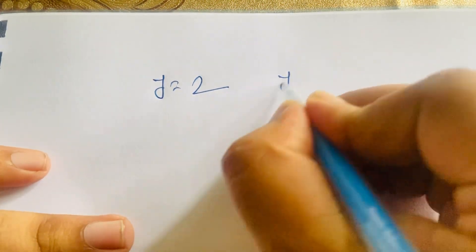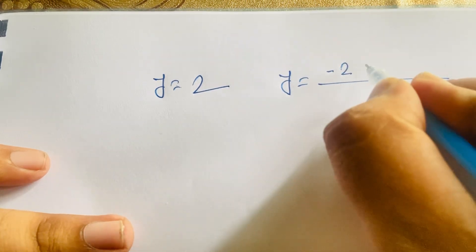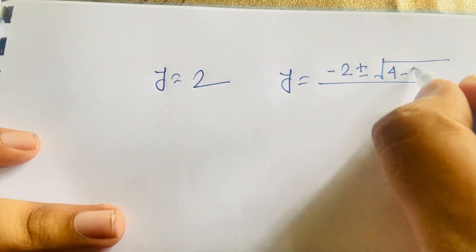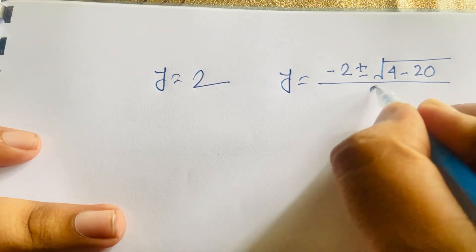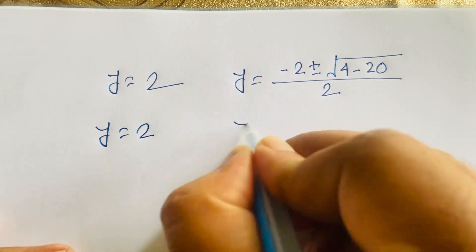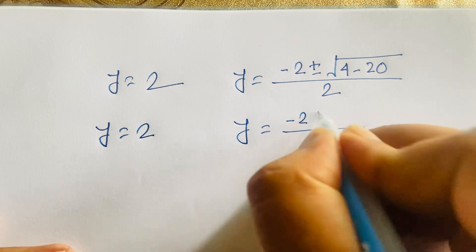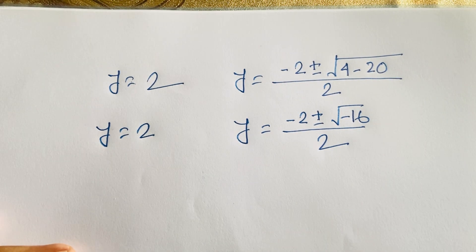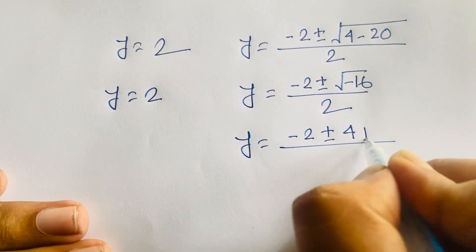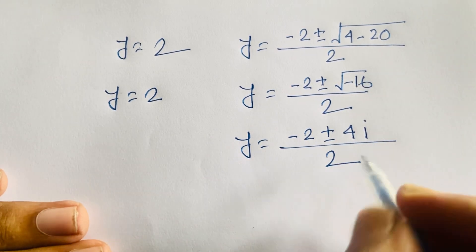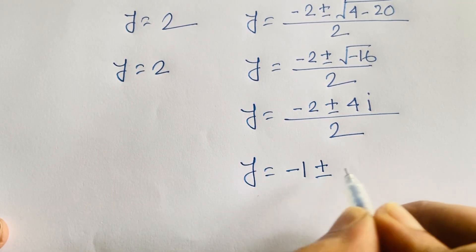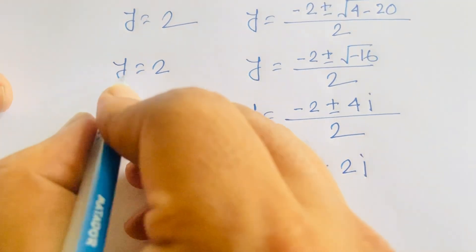Evaluating further: square root of 16 is 4, and square root of minus 1 is i, so we get y equals minus 2 plus or minus 4i, all over 2. This simplifies to y equals minus 1 plus or minus 2i. So the two complex roots are y equals minus 1 plus 2i and y equals minus 1 minus 2i.